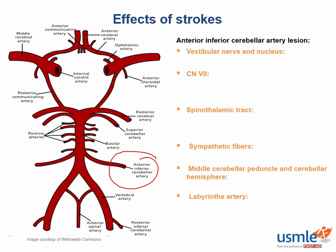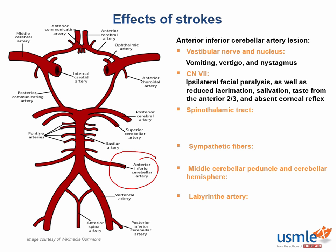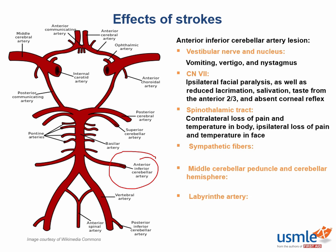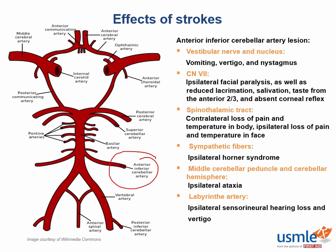With the vestibular nerve and nucleus, you're always looking at vertigo, nystagmus, and vomiting. Cranial nerve 7, the facial nerve, gives facial paralysis, reduced lacrimation, salivation, taste, etc. With the spinothalamic tract, again we see contralateral loss of pain and temperature in the body and ipsilateral loss of pain and temperature in the face. Sympathetic fiber involvement again produces Horner syndrome. The middle cerebellar peduncle and cerebellar hemisphere give ipsilateral ataxia. With the labyrinthine artery, you'd see sensorineural hearing loss ipsilaterally as well as vertigo. Notably, here you don't see hoarseness, helping differentiate PICA from AICA involvement.